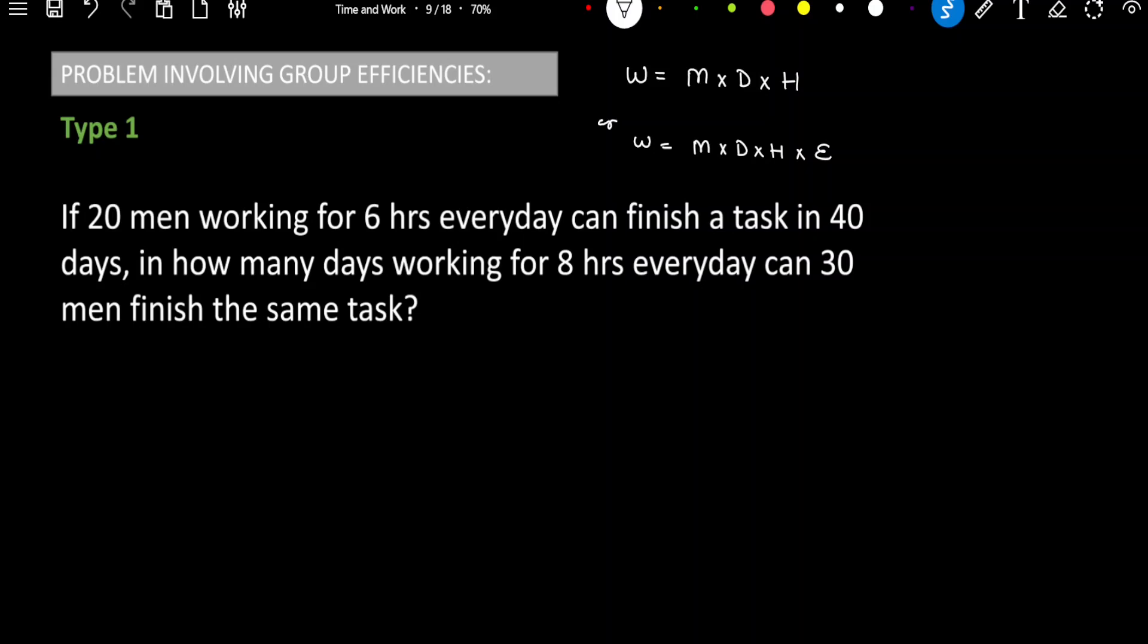And guys, see, remembering these two formulas is very easy. So you must have heard of that advertisement MDH, MDH masala. So from that, you can recall that in the group efficiency problem, we have to use this formula. It is M into D into H where M is men, D is number of days and H is representing number of hours. At times, they will also introduce one more variable that is efficiency. So in that case, we have to use the other formula.